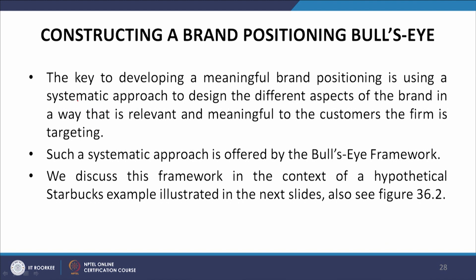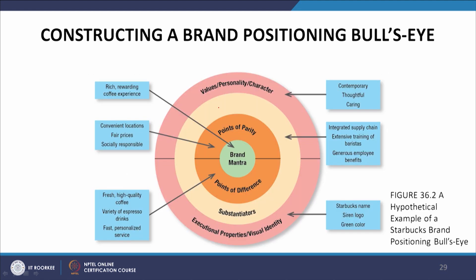The key to developing a meaningful brand positioning is using a systematic approach — the bull's eye framework — to design different aspects of the brand in a way that is relevant and meaningful to the target customer. The brand positioning bull's eye has the brand mantra at its center, covered by points of parity and points of difference, then substantiators, and then the outer circle containing executional properties, visual identity, values, personality and characteristics. In our hypothetical Starbucks example, the brand mantra is 'rich, rewarding coffee experience.'